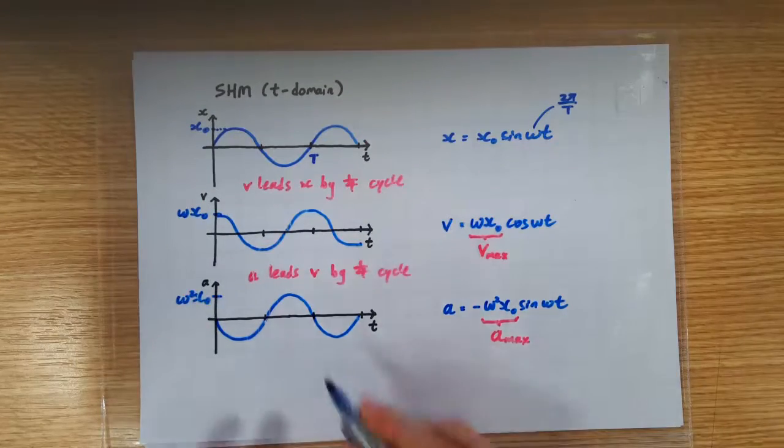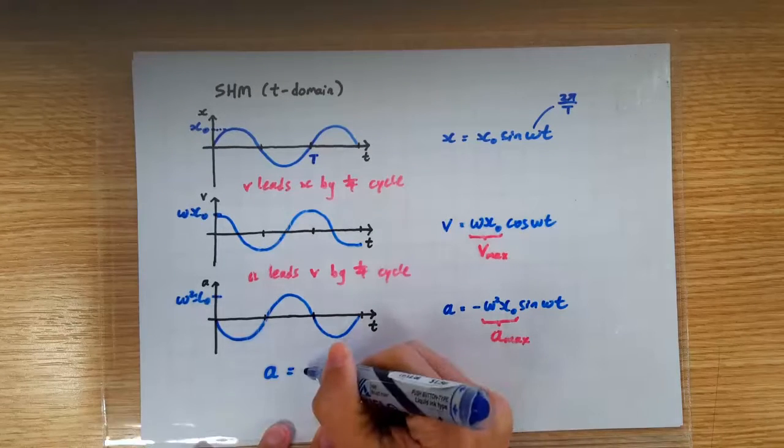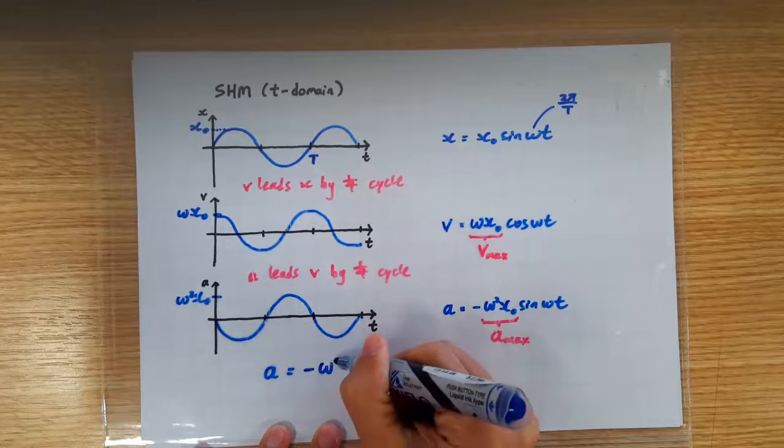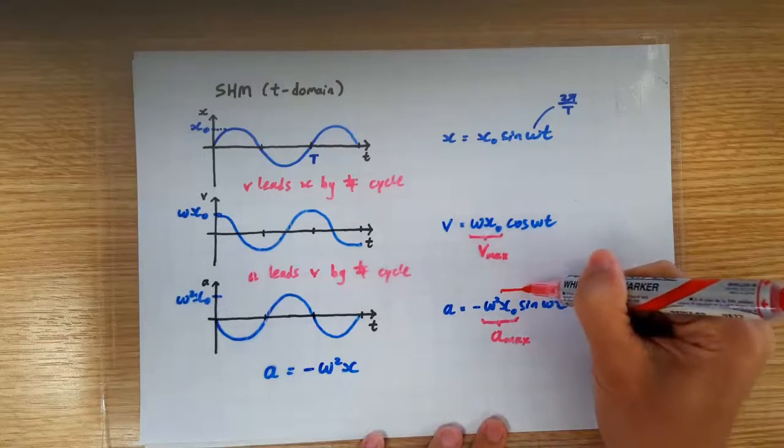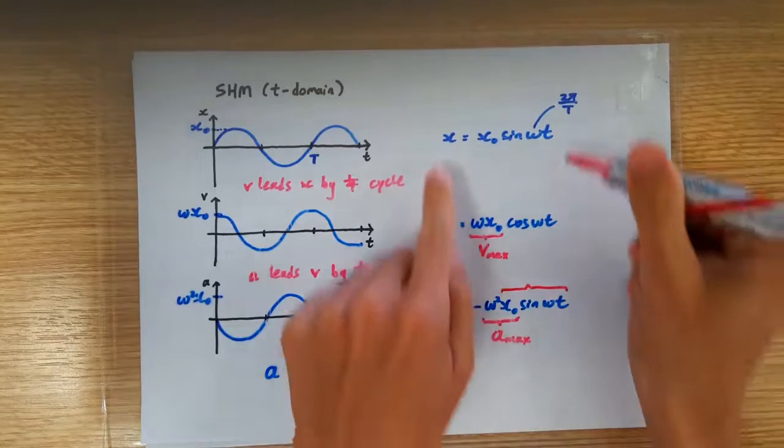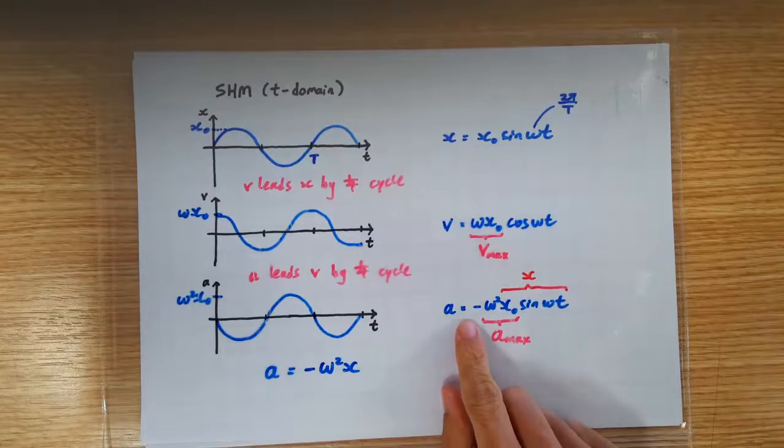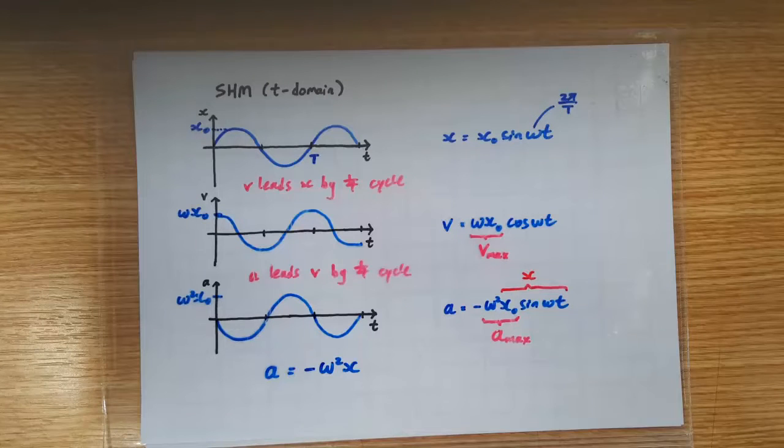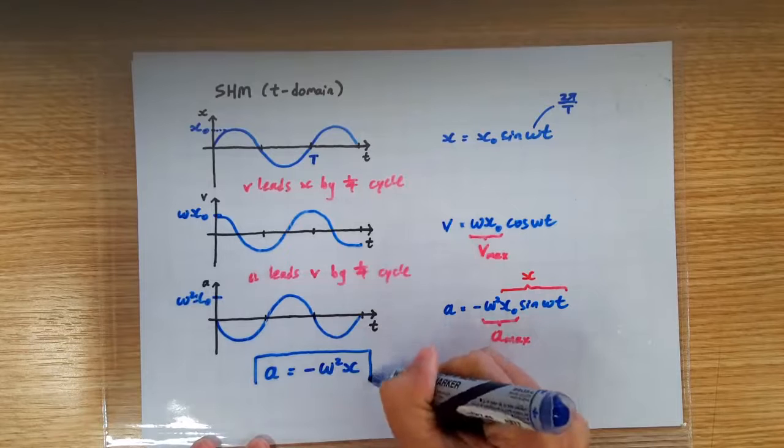And in fact, we know the exact equation describing this relationship is a equals to negative ω²x. Now where did this come from? Look here. What is x0 sin ωt? Isn't it just x? So it's staring right at our face. a = -ω²x. And this is the defining equation for SHM.